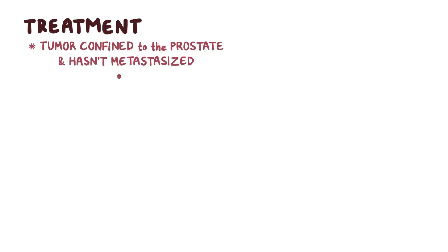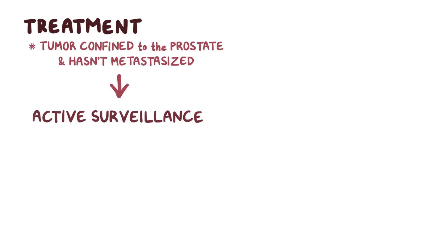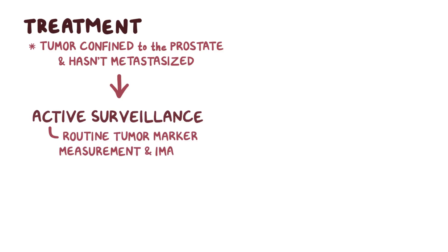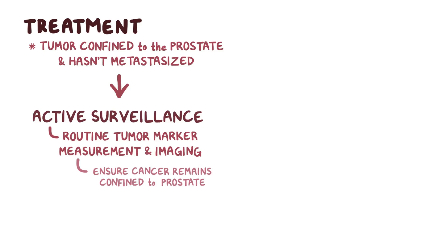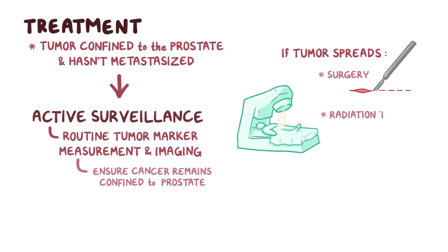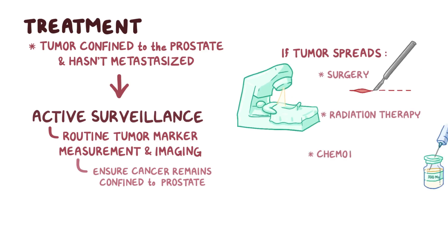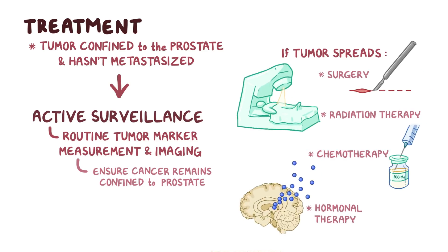In terms of treatment, when the tumor is confined to the prostate and hasn't metastasized, active surveillance is usually done. This includes routine tumor marker measurement as well as imaging to ensure that the prostate cancer remains confined to the prostate. If the tumor spreads beyond that point, treatment options include surgery, radiation therapy, chemotherapy, and hormonal therapy.